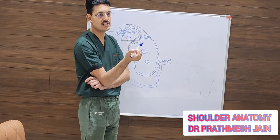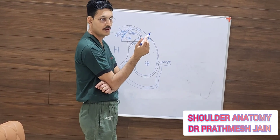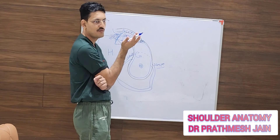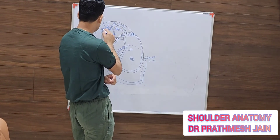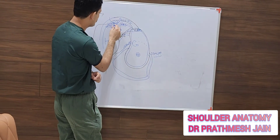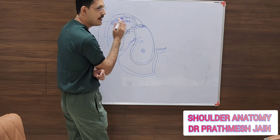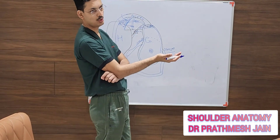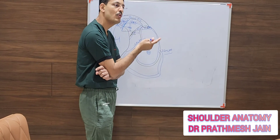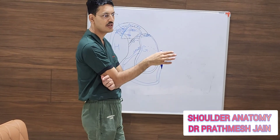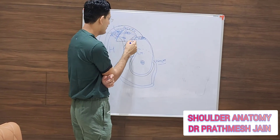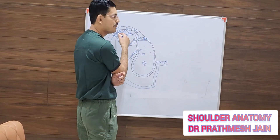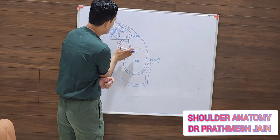These capsular reflections or folds are identifiable but with difficulty — they are very thin, flimsy structures that form the medial sleeve for the biceps tendon as it goes into the biceps groove. When this is torn, the biceps will subluxate medially and that subluxation will be painful — progressing from biceps tendonitis to subluxation to complete dislocation. Subscapularis tendon pathology is almost always associated with biceps tendon pathology, so they should be assessed together.